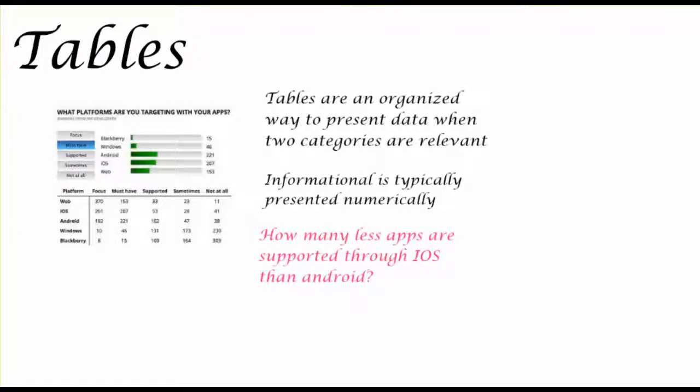So, how many less apps are supported through iOS than Android? So let's pull out the information that we need. We need the apps that are supported for iOS. So supported for iOS is going to be 53 and we need to figure out how much less that is than the apps supported through Android. Well, there are 102 apps supported through Android and we perform a subtraction. 102 minus 53 gives me 49. There are 49 less apps supported through iOS than Android.